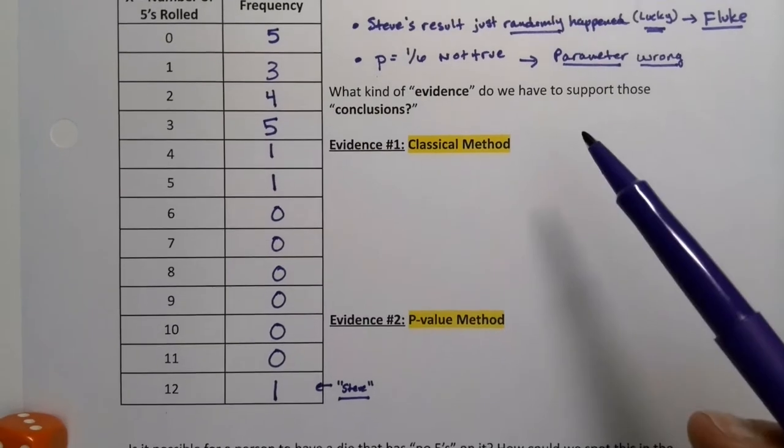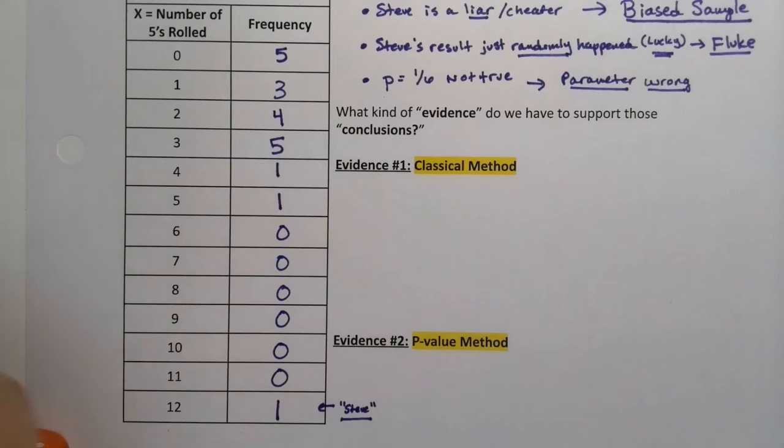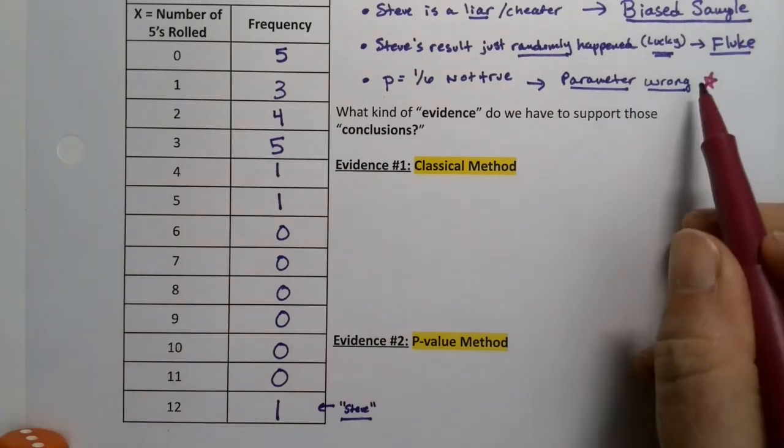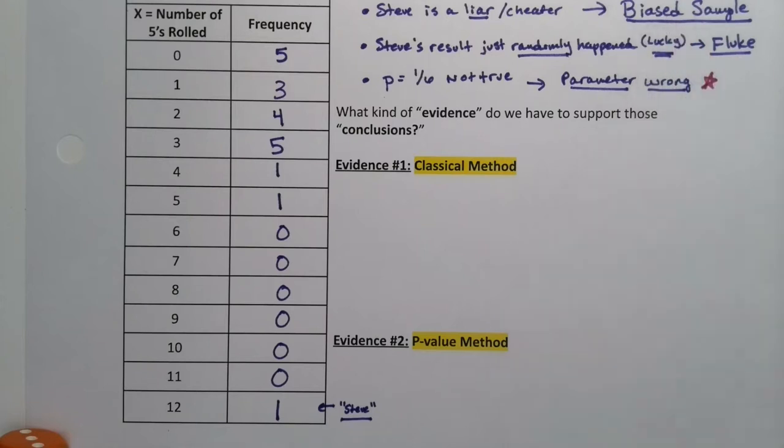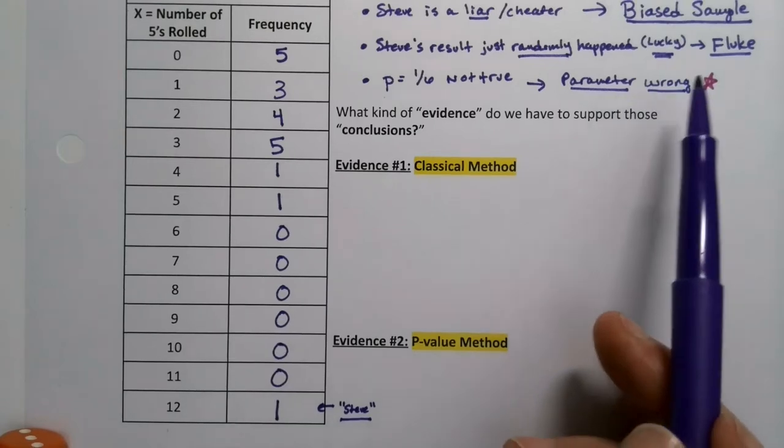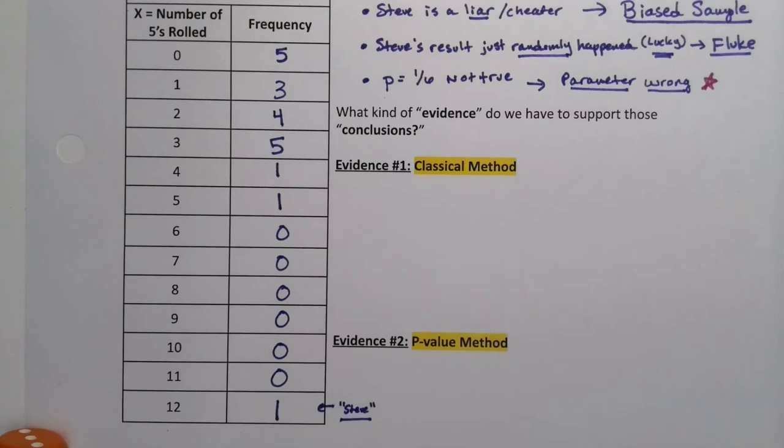So there's two main methods for drawing a conclusion about what's going on here. And I'll give you a hint. The conclusion we're going to draw is this. We're going to say, look, biased samples out because we just have to assume that Steve is telling us the truth, which he was by the way. I can show you why in a little bit. So we have to assume Steve is telling us the truth. If Steve is telling us the truth, then what is the evidence that we have that it's the parameter that's wrong?